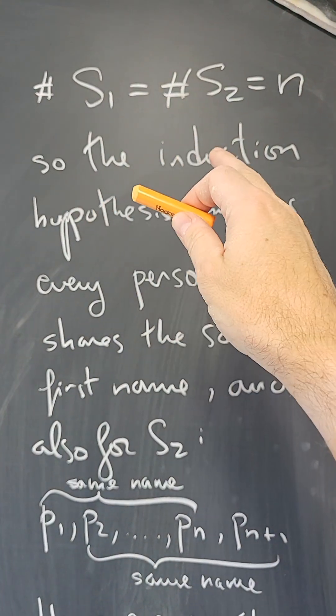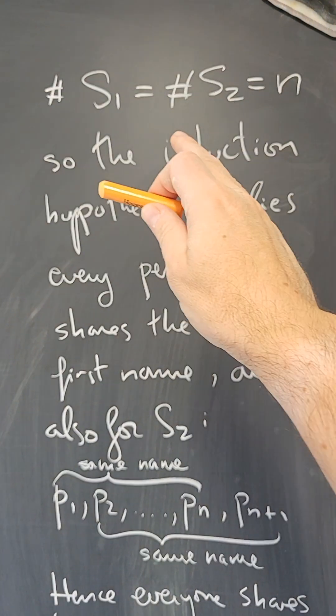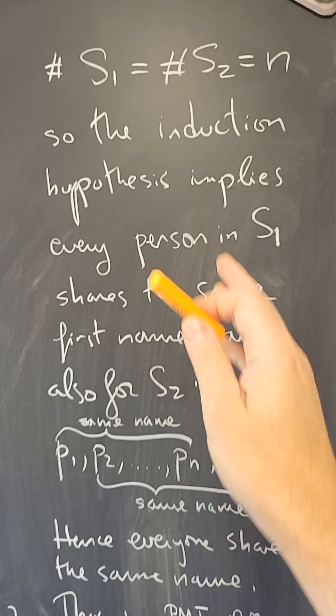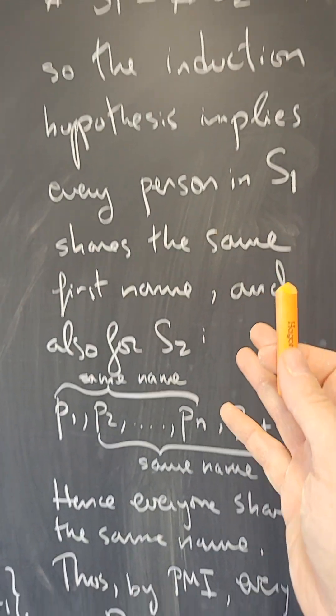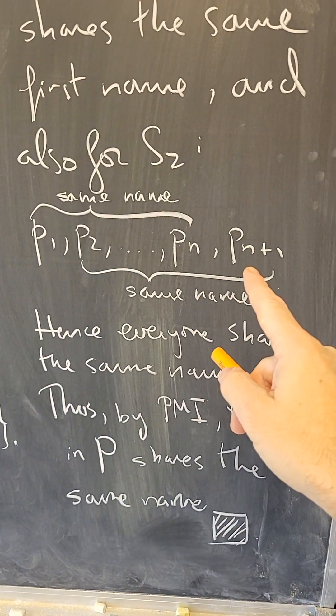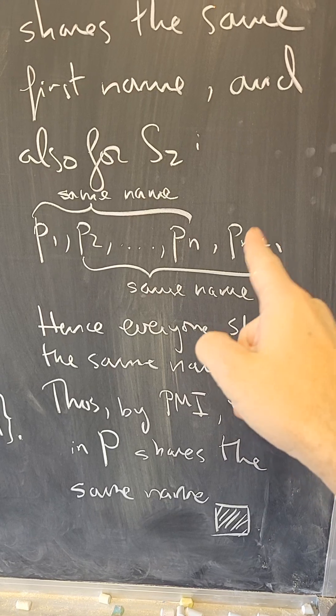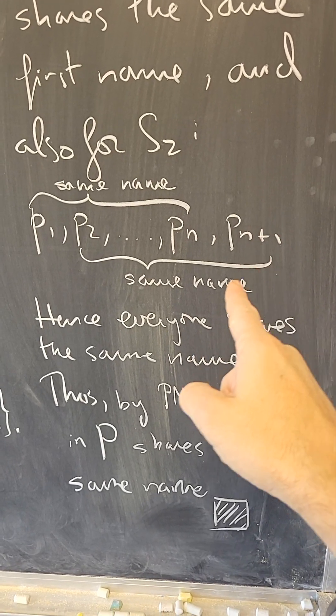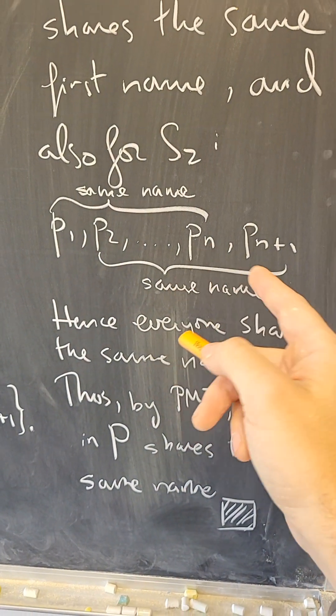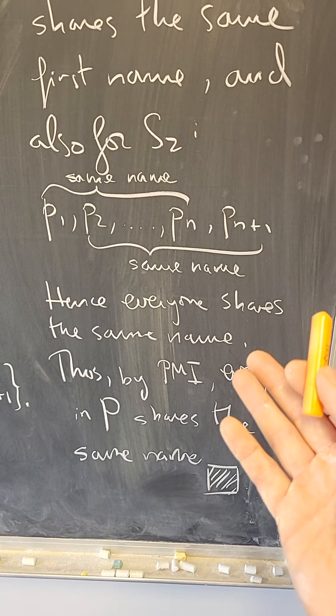Then S1 and S2 have N elements. So the induction hypothesis applies to those sets. So everyone in S1 has the same name. Everyone in S2 has the same name. But then everyone in H will have the same name because these are the people in H. All of those have the same name. And all of these have the same name. Then this person here will have the same name as that person. But that person will also have the same name as everyone else. And therefore everyone in H has exactly the same name. Therefore, we have proved the induction step.